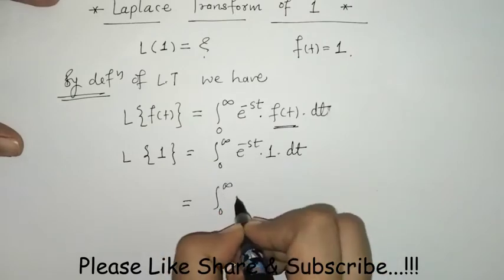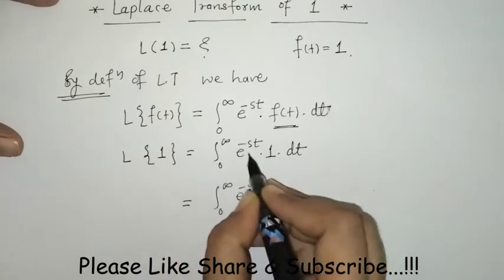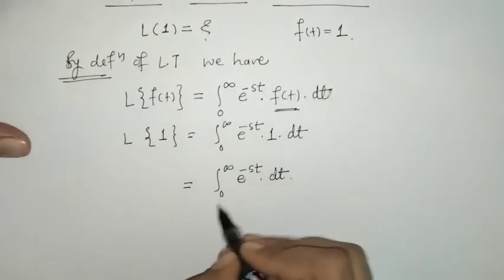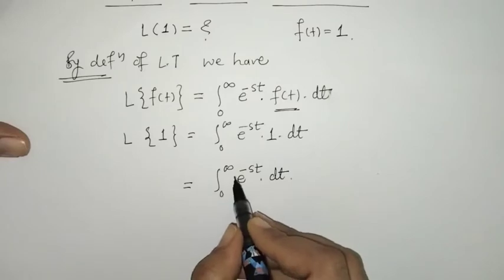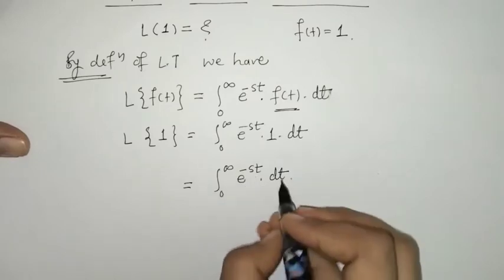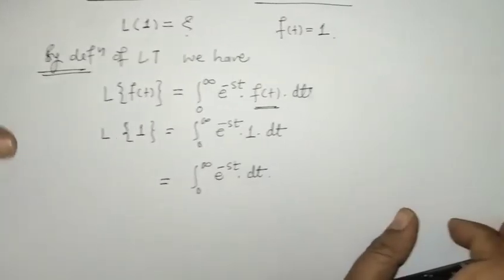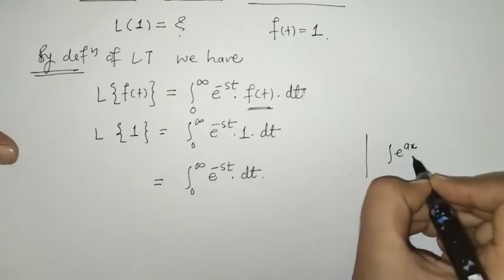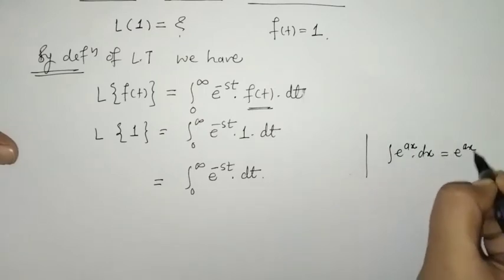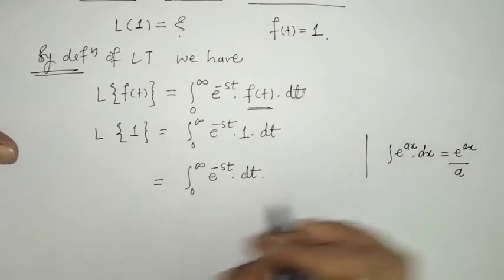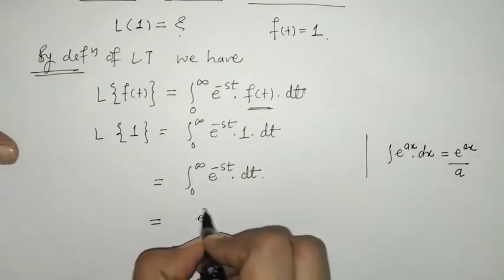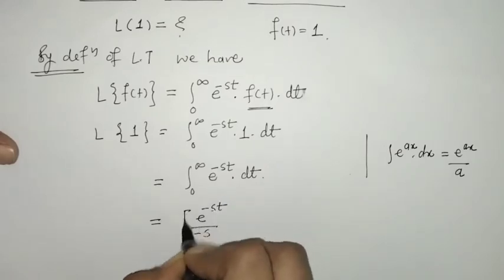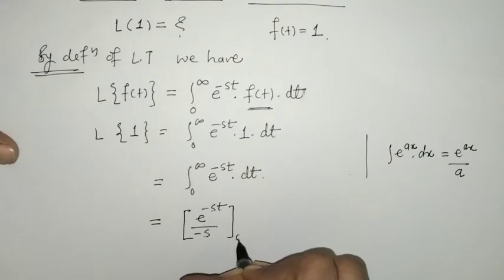On simplification, remaining here we have e raised to minus st. Now we have to find the integration of e raised to minus st with respect to t. We know the integration of e raised to ax with respect to x, so here we have e raised to minus st upon minus s.